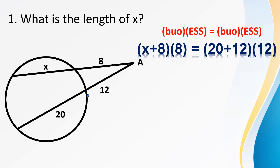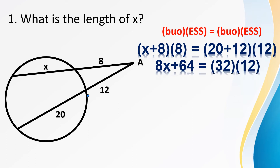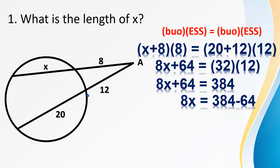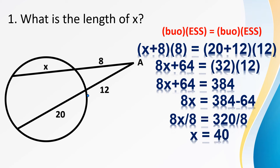Distributing 8: 8 times X is 8X, plus 8 times 8 is 64. Then 20 plus 12 is 32, times 12 gives 384. So 8X plus 64 equals 384. Transposing 64: 8X equals 384 minus 64, which is 320. Dividing both sides by 8, X equals 40.